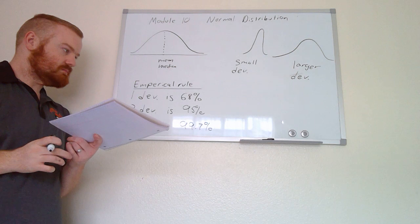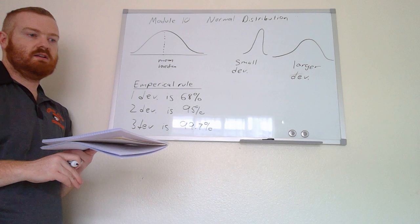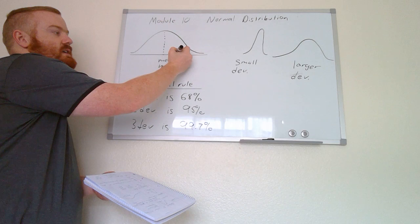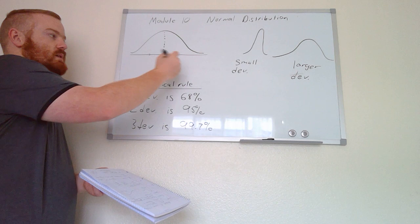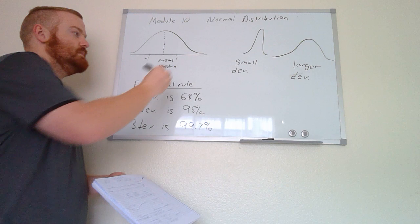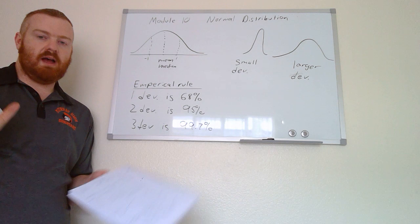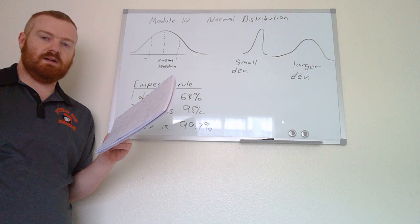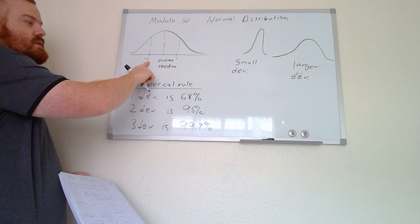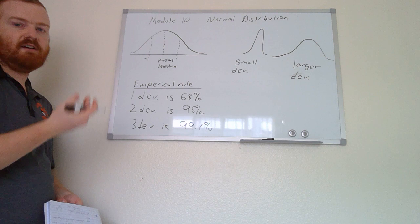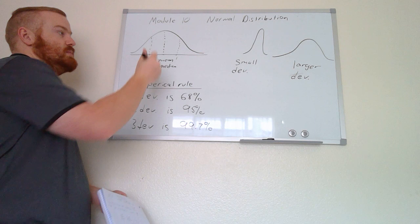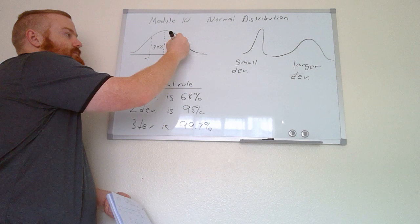Something called the empirical rule tells us what percentage of the data is within certain standard deviations. The tick marks along the x-axis represent standard deviations. According to the empirical rule, one standard deviation contains 68% of the data points — so 68% fall between one standard deviation below and one above. Cut in half, each side represents 34%.